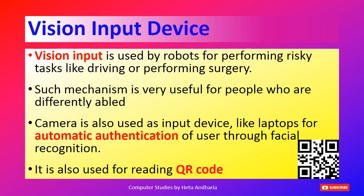The last input device is the Vision Input Device. For example, your phone's back camera can be used to scan the QR code of Paytm or any digital payment application — that is a vision input. Another example is face recognition technology used as a face lock on mobile phones or laptops. Vision input is also used by robots for performing risky operations such as driving, performing surgery, and it is very useful for differently-abled people.